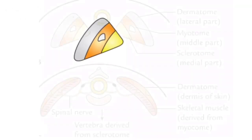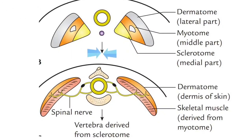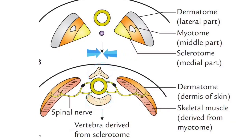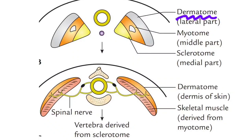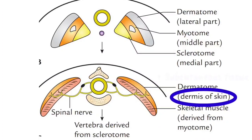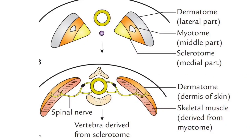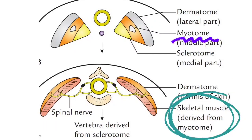The cells from the sclerotome migrate medially and lie on either side of the neural tube to give rise to the vertebral column and ribs. The dermatome cells migrate to line deep to the surface ectoderm and give rise to the dermis of the skin and subcutaneous tissues. The myotome gives rise to striated muscles of the trunk and diaphragm.